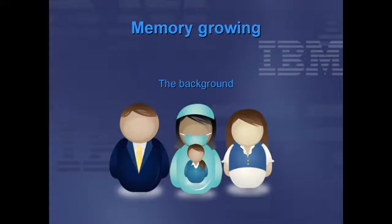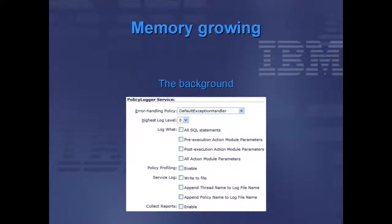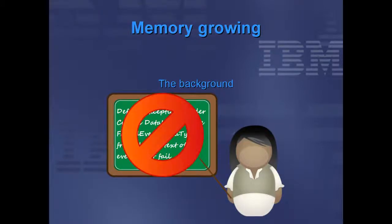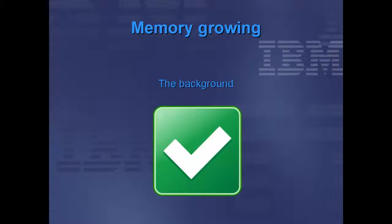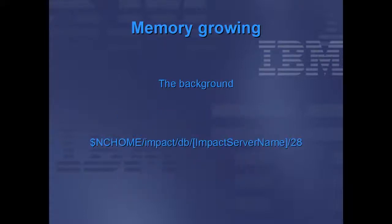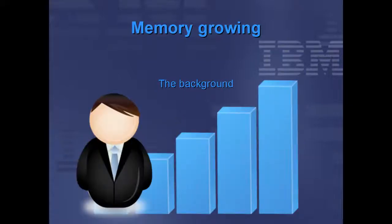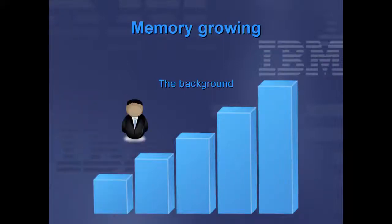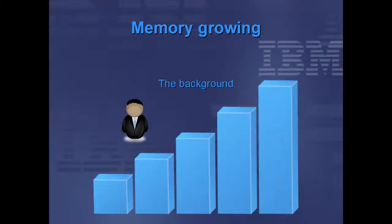Some further background information: the Impact 4 misnomered default exception handler policy was set by default as the policy logger exception handler, but was little advertised or described. Customers took it on trust that this was the best way to handle exceptions. It was contended that this should have been named 'example exception handler', as all it did was record context details in the failed event data type — which also writes to disk — and the filling of this data type generally went unnoticed. The unwritten expectation was that customers would be aware of this filling data type and would handle the events as desired.